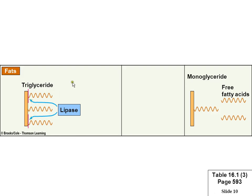Fats start as triglycerides — imagine a glycerol hanger with three fatty chains hanging off it. The enzyme lipase goes in and breaks apart lipids, breaking the triglyceride into a monoglyceride with one chain and two free fatty acids. Once broken into these simple components, you can absorb them.